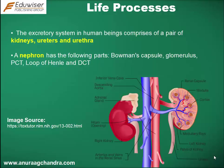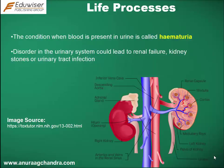A nephron has the following parts: Bowman's capsule, glomerulus, PCT, loop of Henle, and DCT. The condition when blood is present in urine is called hematuria. Disorders in the urinary system could lead to renal failure, kidney stones, or urinary tract infection.